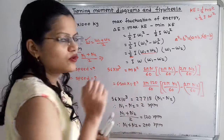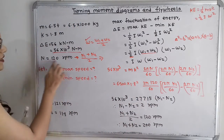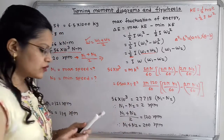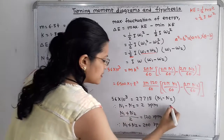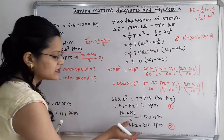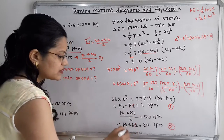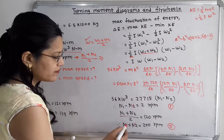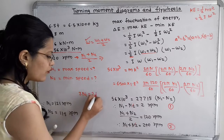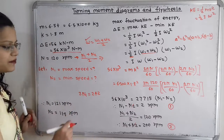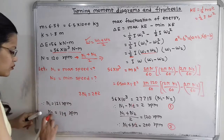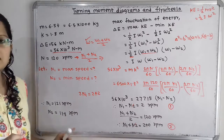So N1 minus N2 equals 2 rpm — this is equation 2. And since N equals N1 plus N2 divided by 2 equals 120, we get N1 plus N2 equals 240 rpm — this is equation 1. Adding both equations, N2 cancels, giving 2 N1 equals 242, so N1 equals 121 rpm. Substituting back, 121 minus N2 equals 2, so N2 equals 119 rpm. This is the answer: maximum speed is 121 rpm and minimum speed is 119 rpm.